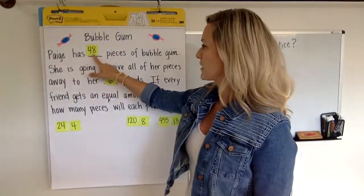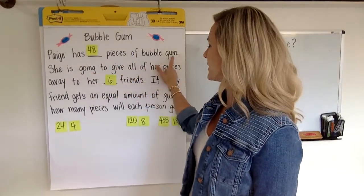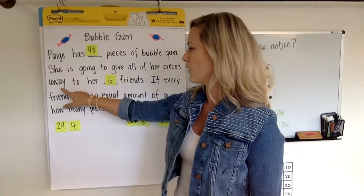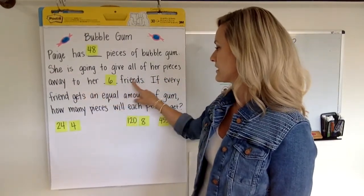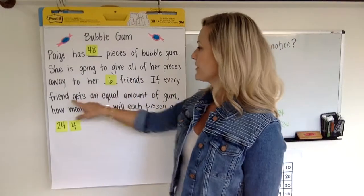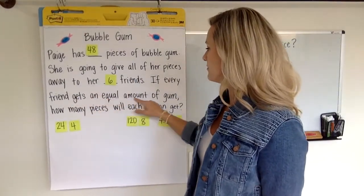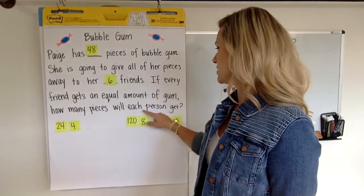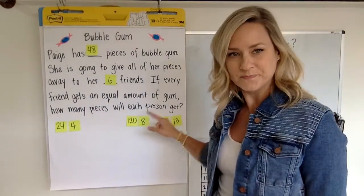Paige has 48 pieces of bubble gum. She is going to give all of her pieces away to her six friends. If every friend gets an equal amount of gum, how many pieces will each person get?